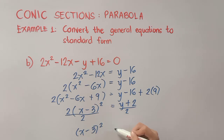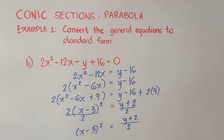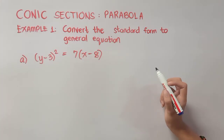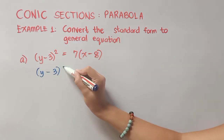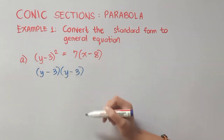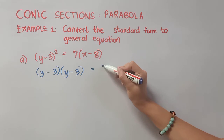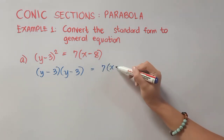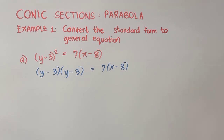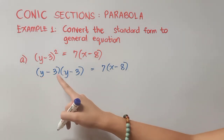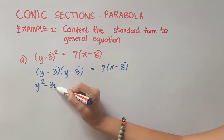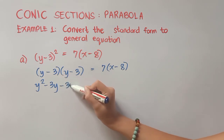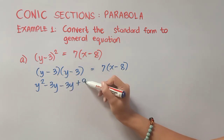We can now proceed to Standard to General Form. We have (y − 3)², which means we multiply y minus 3 by itself, then copy whatever is on the right side: 7(x − 8). Using the FOIL method: y times y is y squared, y times negative 3 is negative 3y, negative 3 times y is negative 3y, and negative 3 times negative 3 is positive 9.